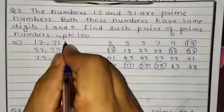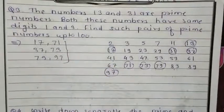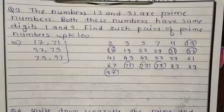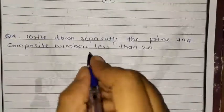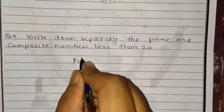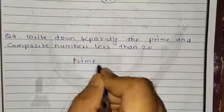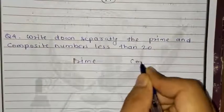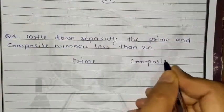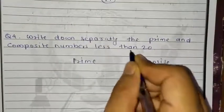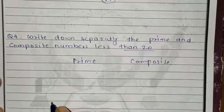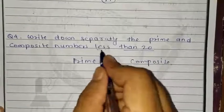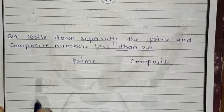So these are the pairs we got. This is the answer of question 3. Question number 4: write down separately the prime and composite numbers which are less than 20. First we will list the prime numbers.